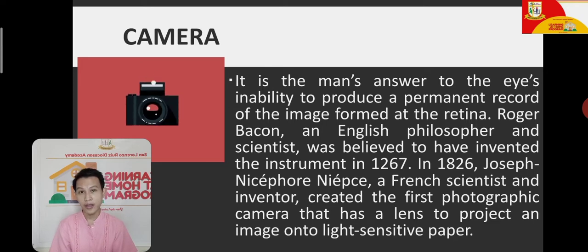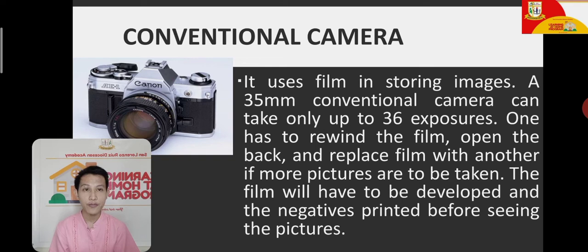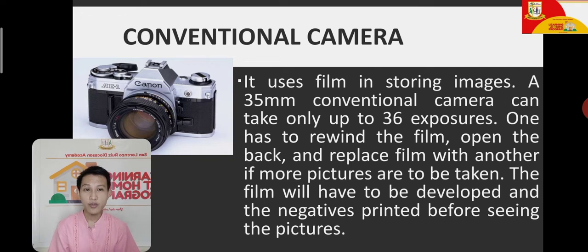We have two different types of cameras. The first is what we call the conventional camera, or film camera. A 35mm conventional camera can only take up to 36 exposures. One has to rewind the film, open the back, and replace the film with another if more pictures are to be taken. There were no memory cards back then — only film with a limited number of exposures.